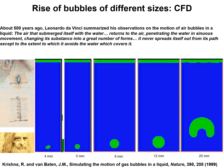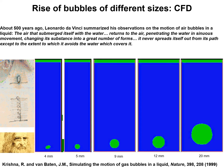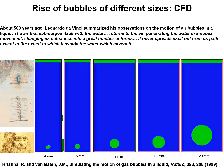A twenty millimeter bubble sheds off its edges and rises straight up. So there's a huge difference between a four millimeter bubble and a twenty millimeter bubble. In a bubble column we have a combination of various size ranges, from four millimeters up to perhaps thirty millimeters.